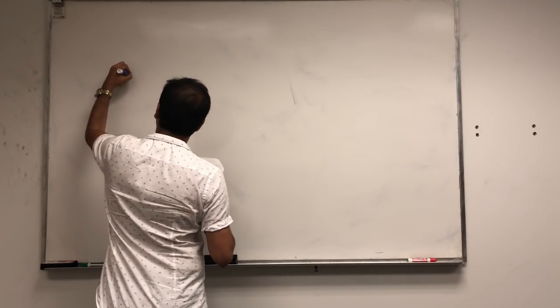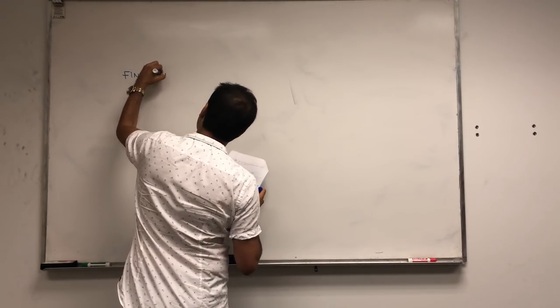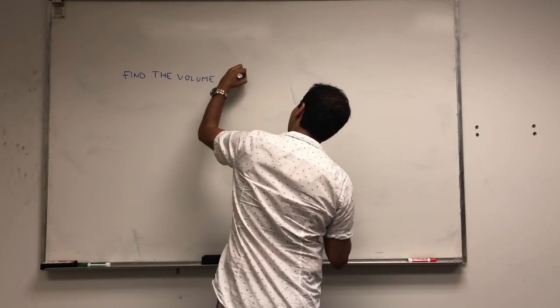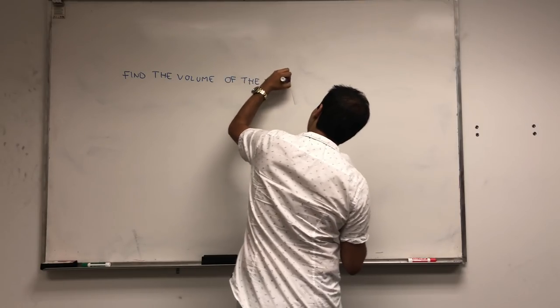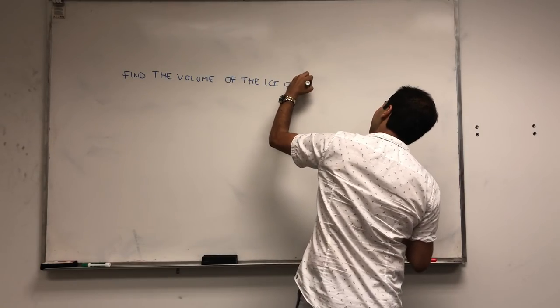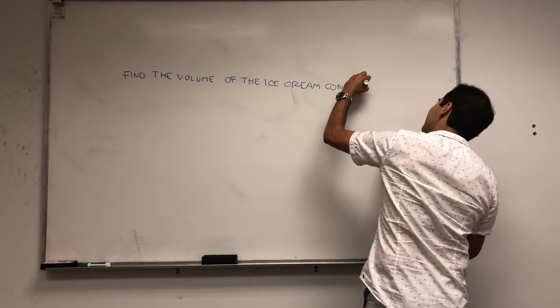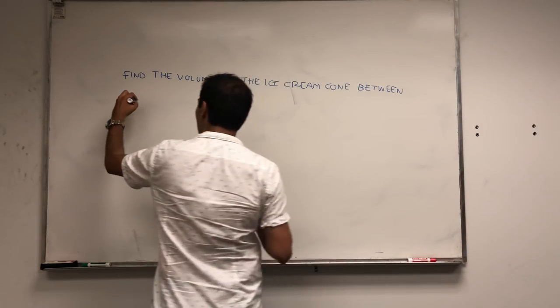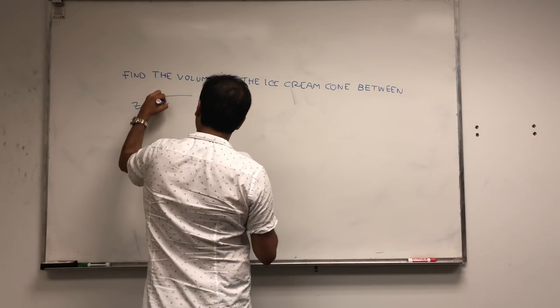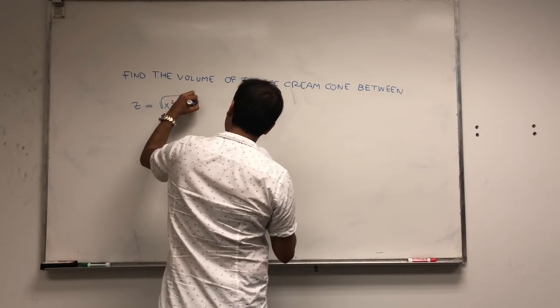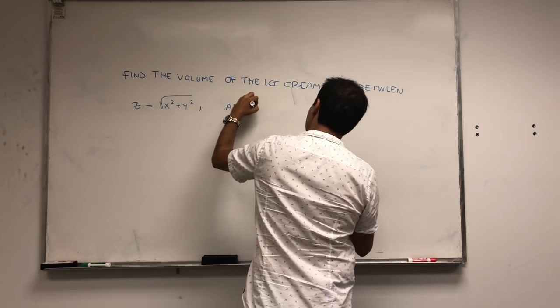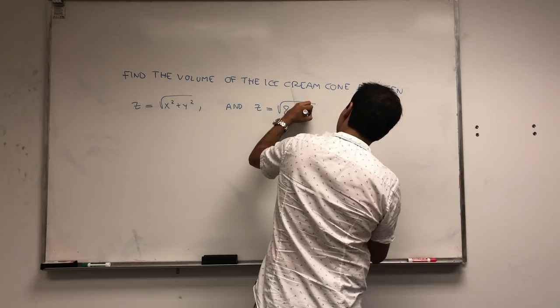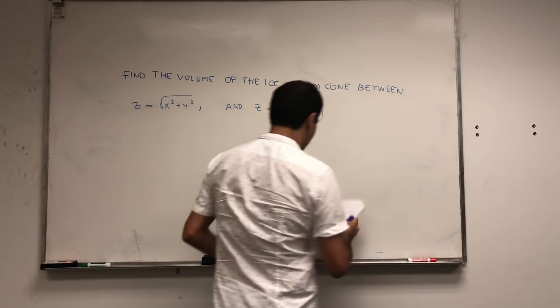So let's find the volume of the region, the ice cream cone again. It's still summer so it's okay. The cone between, literally the cone z equals square root of x squared plus y squared and z equals square root of eight minus x squared plus y squared.